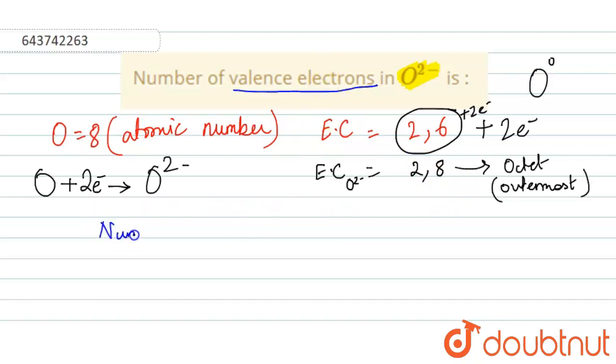So, the number of valence electrons in O2- ion is 8. This is your complete answer. Thank you.